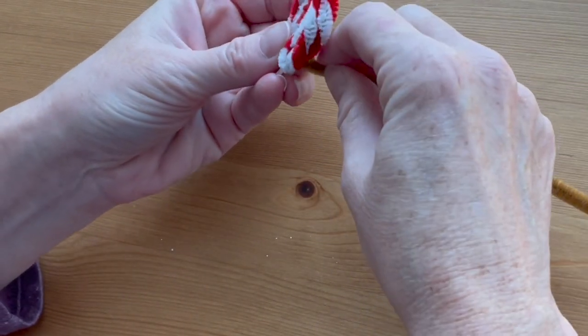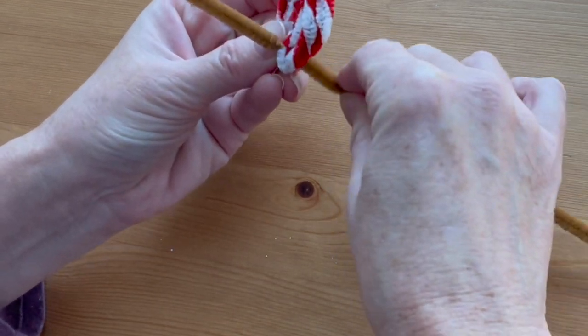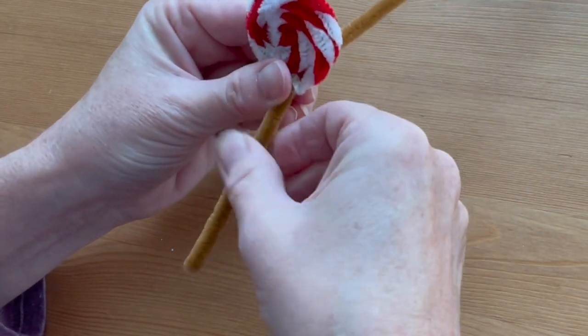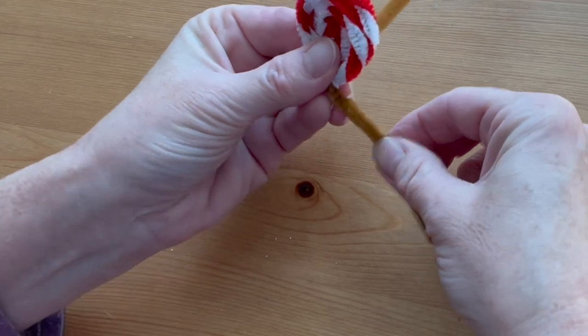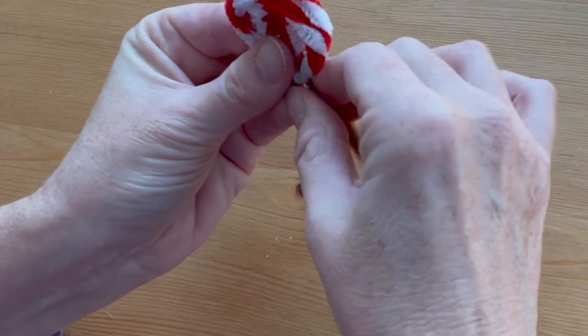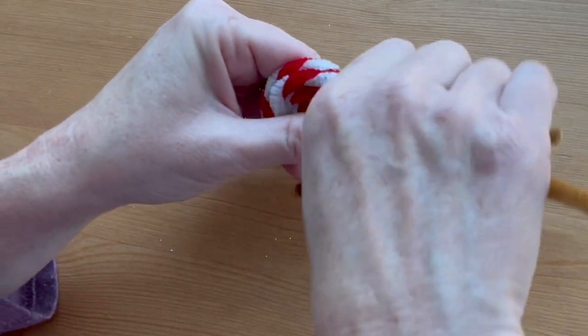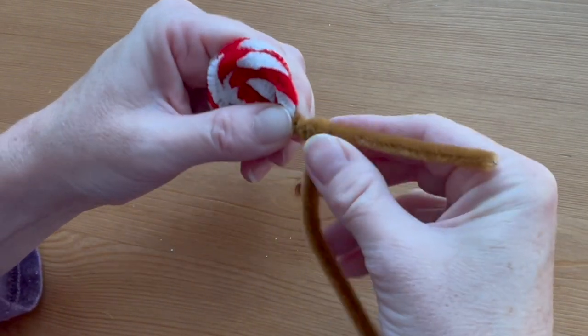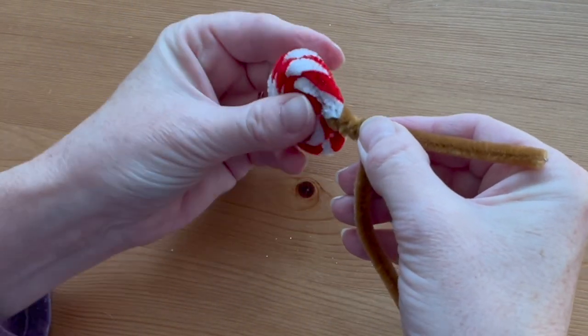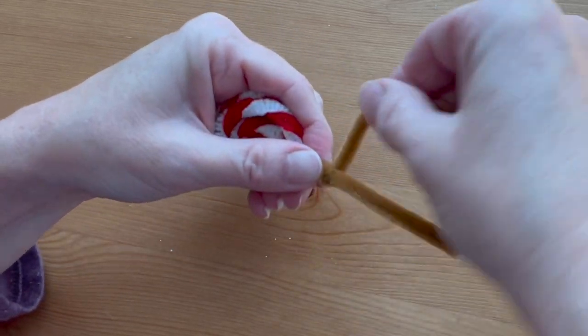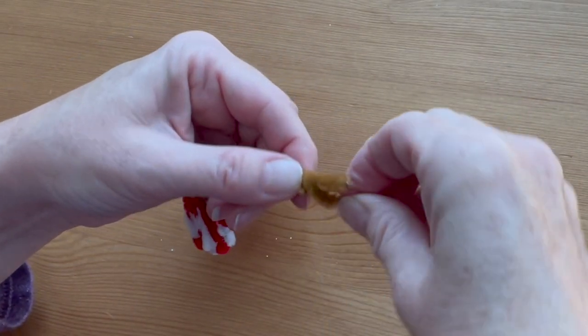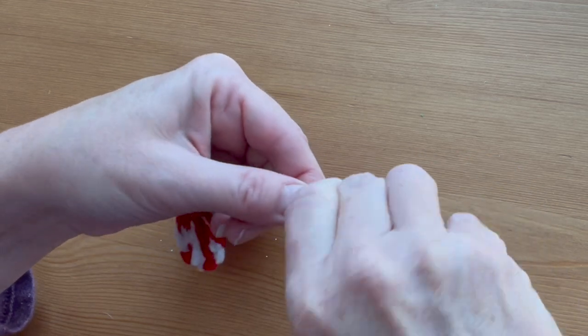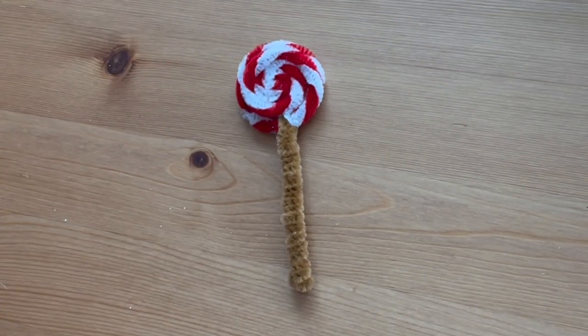Insert the brown pipe cleaner on the bottom outside coil and fold it down so you have a straight piece that's about one-third of the pipe cleaner. Then bring the other longer half around and twist it down the shorter end of the pipe cleaner to make the lollipop stick. And you're finished.